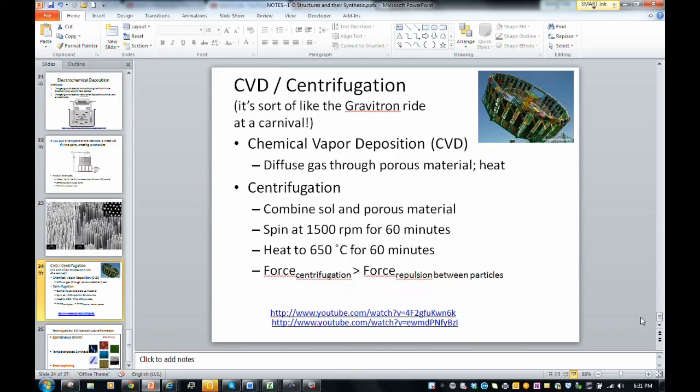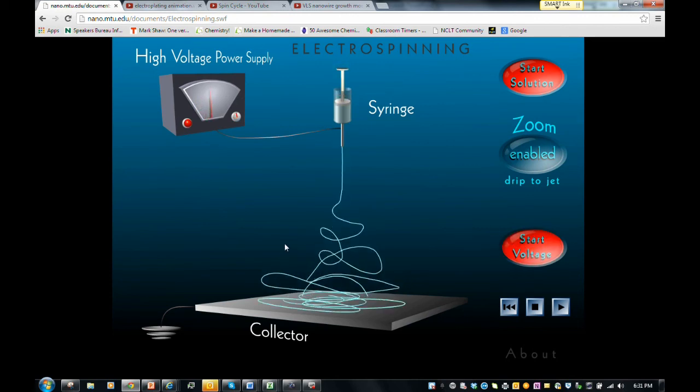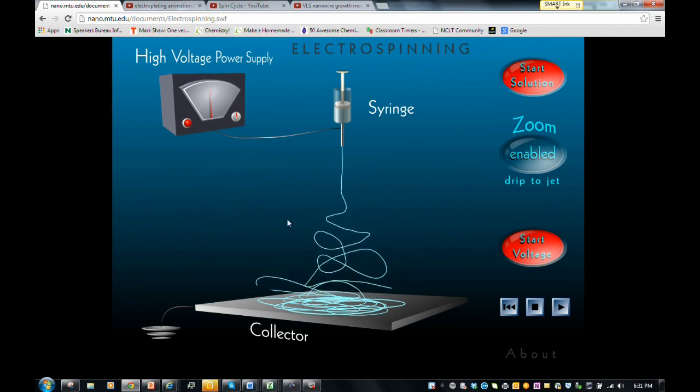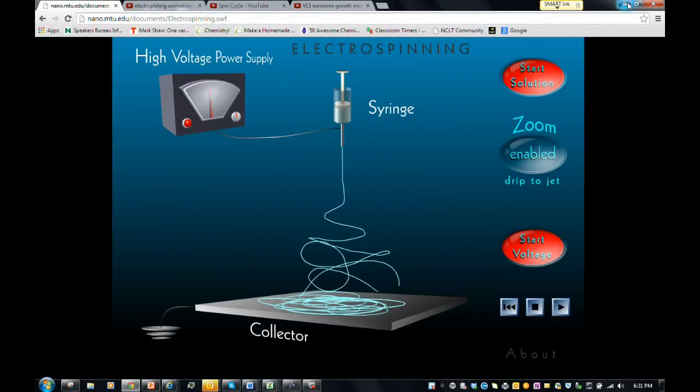Let's take a look at this little animation. This is called electrospinning. We can start the solution coming from the syringe, and we can start the voltage and see what happens. Current is increasing, and now it starts to literally spin out this fiber mat. Pretty cool. So this would be a huge mess, but this is another way that you can make one of those 1D nanostructures. And that is it for synthesizing these.